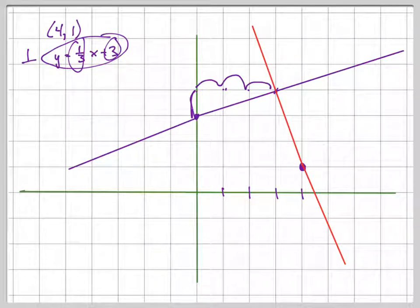And the red one, if you notice, is going to have a run of 1 and a rise of 3, but it's going the other direction. It's actually tilted the other way.